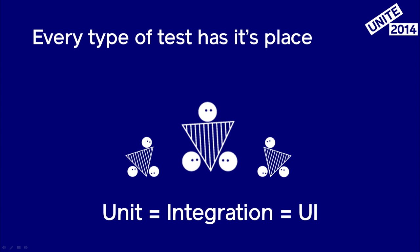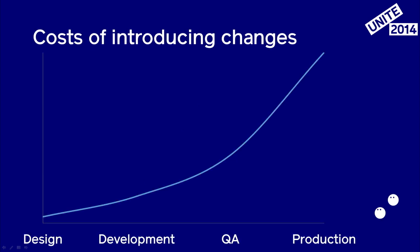There's also another thing that is important when you think about test automation, maybe a bit more from the business point of view: the cost of introducing changes in your code. It raises really quickly in different stages of development, and of course fixing bugs is introducing changes. So you want to do it as soon as possible in the development cycle so you can keep the costs as low as possible.